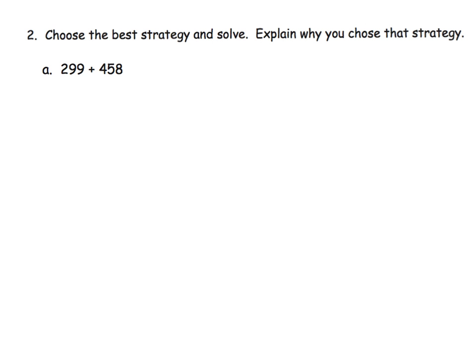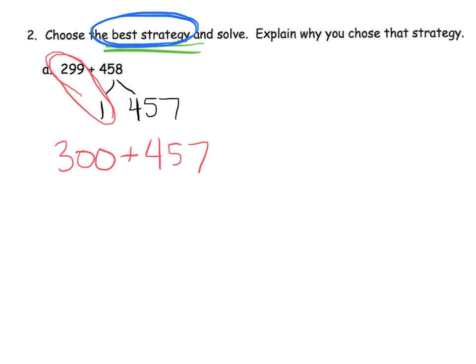So I chose this in our video because it says choose the best strategy and solve. Parents, teachers, come on. Whatever strategy speaks most loudly to the student, that's the best strategy to use. There is no competition here as to what really is the best strategy, so I'm just going to give you one method per problem, but it is absolutely not necessarily the best strategy. I'm going to start by decomposing 299 to 1 plus 298. Actually, I'll decompose 458 to 1 plus 457, because there you can see I now made a landmark number, I made a friendly number, 300. 300 plus 457 gives us the answer 757.